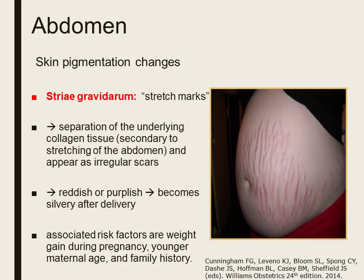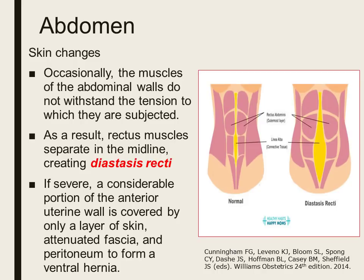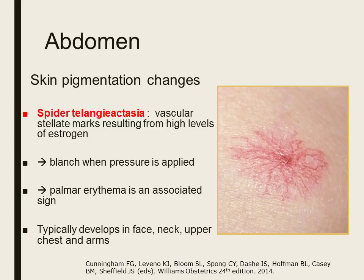Associated risk factors for stretch marks are weight gain during pregnancy, younger maternal age, and family history. Under skin changes, we also have diastasis recti. Occasionally the muscles of the abdominal walls do not withstand the tension, and as a result the rectus muscles separate in the midline. If severe, a considerable portion of the anterior uterine wall is covered by only a layer of skin, attenuated fascia, and peritoneum. Spider telangiectasia are vascular stellate marks resulting from high levels of estrogen; these marks blanch when pressure is applied. Palmar erythema is an associated sign, and spider telangiectasia typically develop on the face, neck, upper chest, and arms.